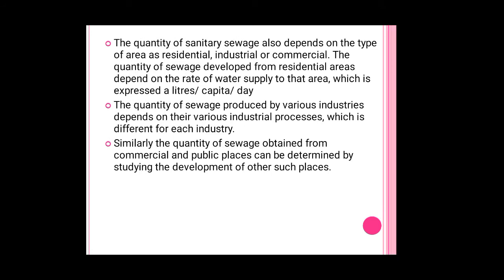The quantity of sanitary sewage also depends on the type of area — residential, industrial, commercial, etc. The quantity of sewage depends on the rate of water supply to the area, expressed in liters per capita per day. The quantity of sewage produced by various industries depends on their respective industrial processes, which differ for each industry. Similarly, the quantity of sewage from commercial and public places can be determined by studying the development of other such places.